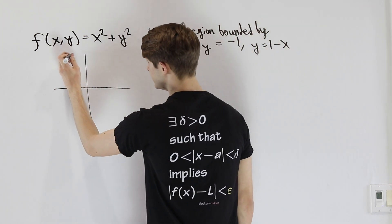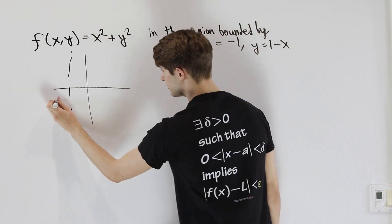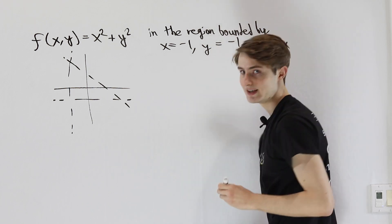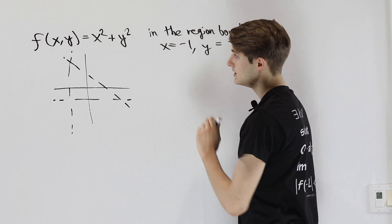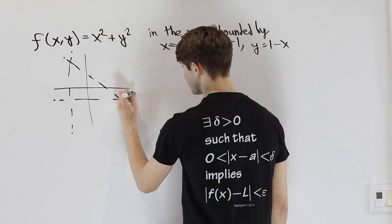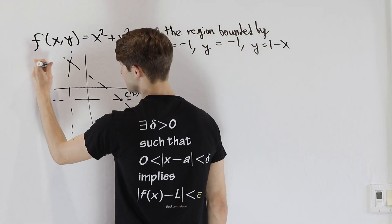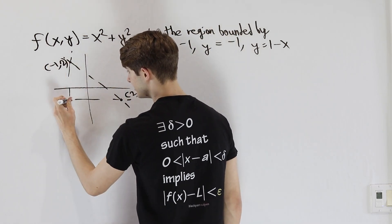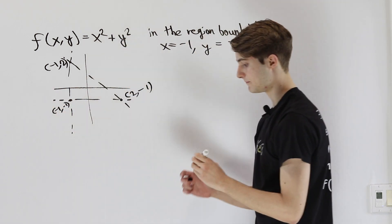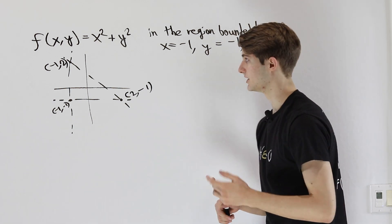X equals negative 1 is going to be this line here, y equals negative 1 shows up here, and then we have the line y equals 1 minus x. These are going to intersect at three different places: the point (2, negative 1), the point (negative 1, 2), and the point (negative 1, negative 1). Inside this triangle is the region we're trying to optimize.